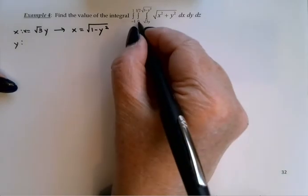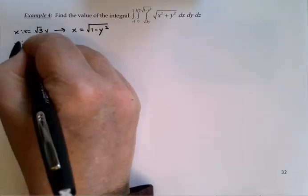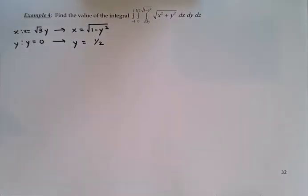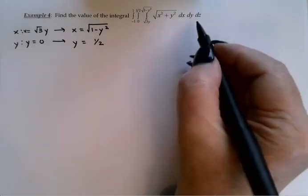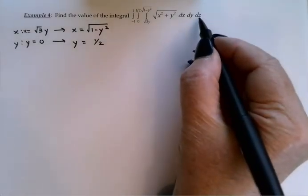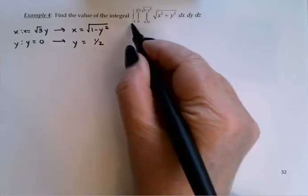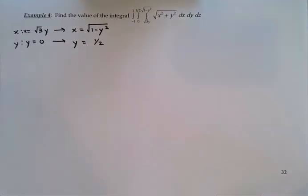to x equals the square root of 1 minus y squared. y goes from y equals 0 to y equals 1 half. I'm actually not going to bother listing the z's. The reason for that is that z in cylindrical coordinates is the same as z in rectangular coordinates. So the z limits of integration aren't going to have to be changed.